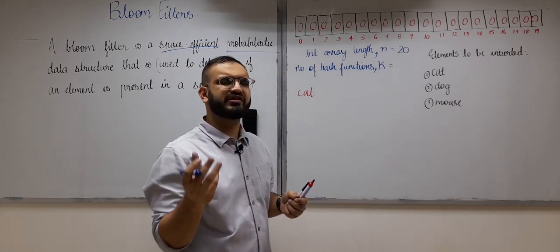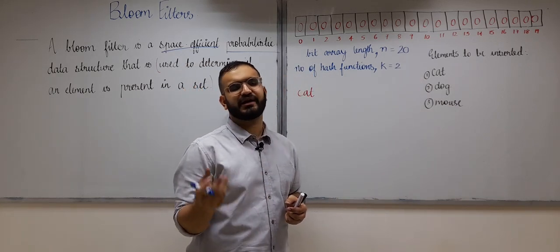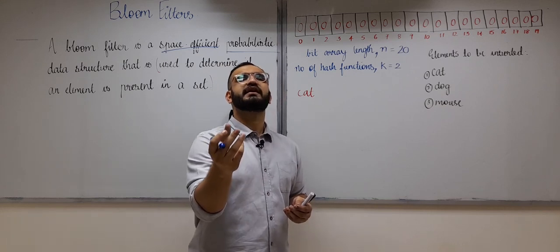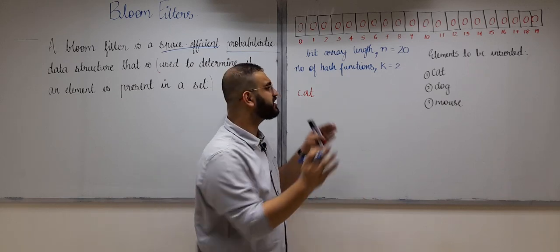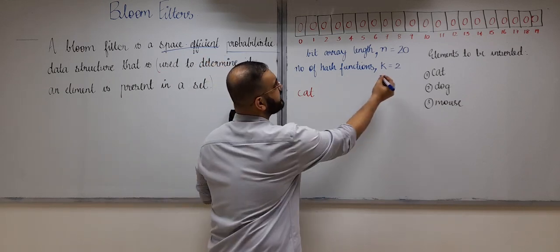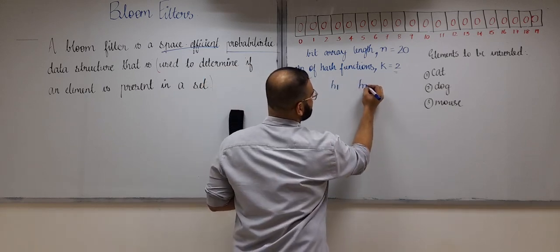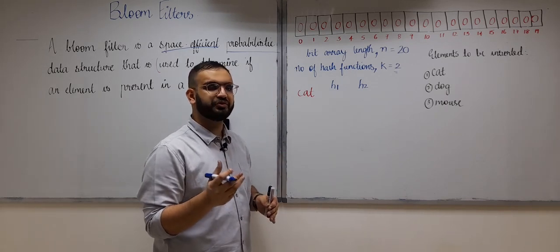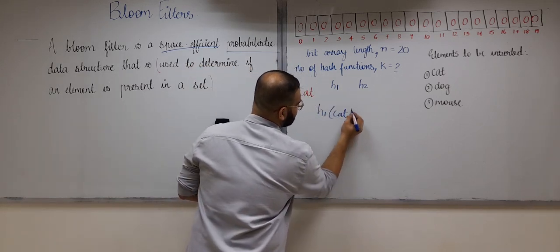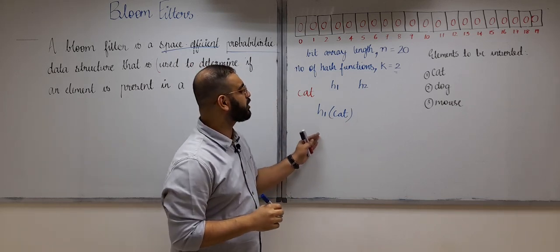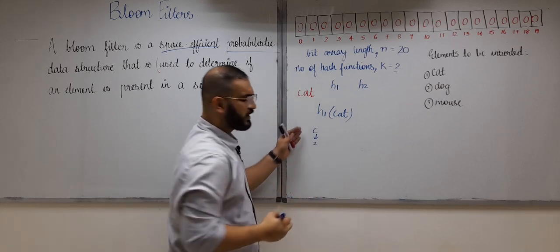In this case let's assume we have two hash functions — h1 and h2. Hash functions are irreversible functions that take any input but give a fixed-length output. It is not important for us to know how the hash function calculates its value — just pay attention and you will understand everything.